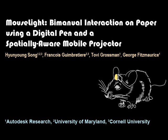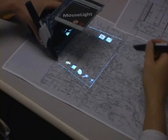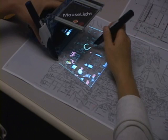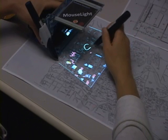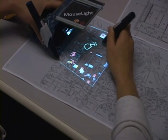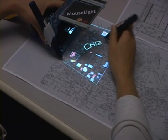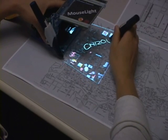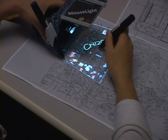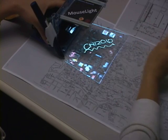The mouse light system allows users to display virtual contents on paper and interact with it using a digital pen. Users not only add ink to the physical surface, but to the virtual surface.